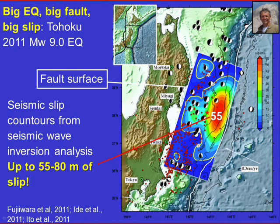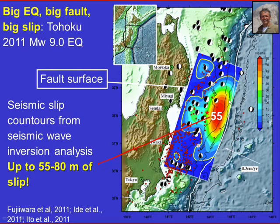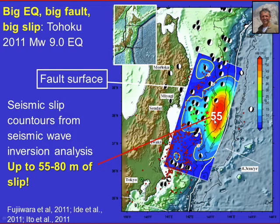The Tohoku earthquake also accommodated a lot of slip. The basic rule is: big earthquake = big magnitude = big fault = big slip. In the case of the Tohoku earthquake, the fault surface was about 100,000 square kilometers. The colors on the fault surface represent areas of slip, with up to 55 meters of slip in the red areas. Basically it's like half a football field — a large movement of two blocks relative to each other. Because of this large slip, there was also an important uplift of the ocean floor that triggered the tsunami wave.